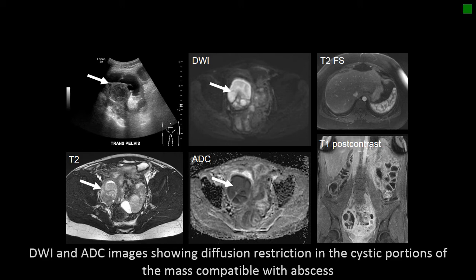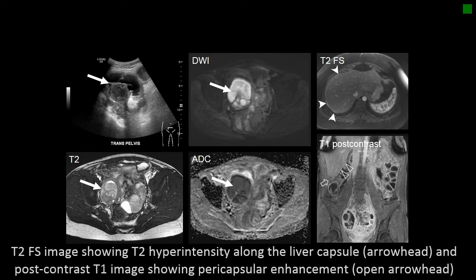Interestingly, on the limited abdominal images, we can also see edema of the liver capsule and abnormal enhancement of the liver capsule, consistent with perihepatitis or Fitzhugh-Curtis syndrome.